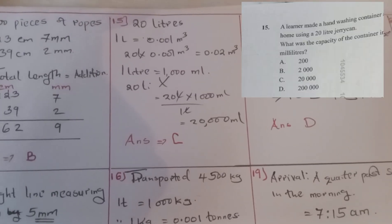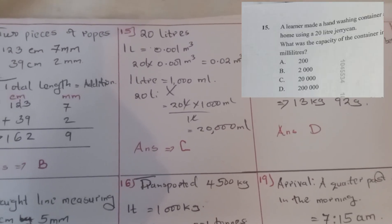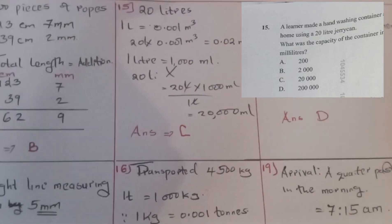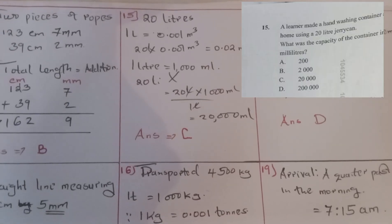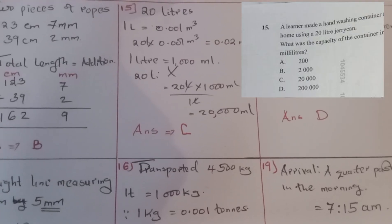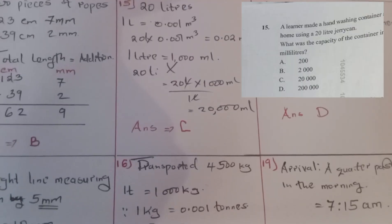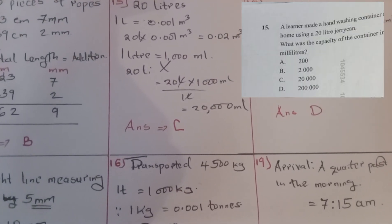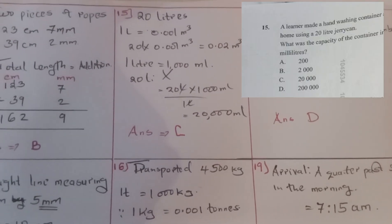Question fifteen: Alana made a hand-washing container using a 20-liter jerrycan. What was the capacity of the container in milliliters? We convert liters to milliliters — one liter equals 1,000 milliliters. So 20 liters times 1,000 equals 20,000 milliliters. The correct answer was C.